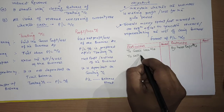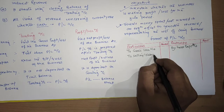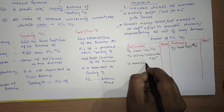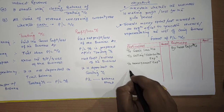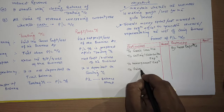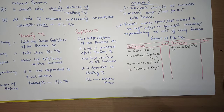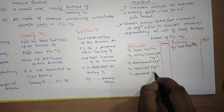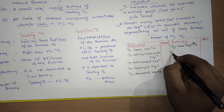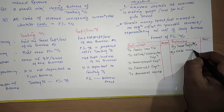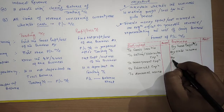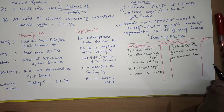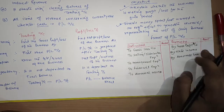Then we write all types of selling and distribution expenses relating to the business, followed by all management expenses, and then all financial expenses. We also write all abnormal losses on the debit side. On the credit side, we write other incomes received by the company, such as discount received and commission received.